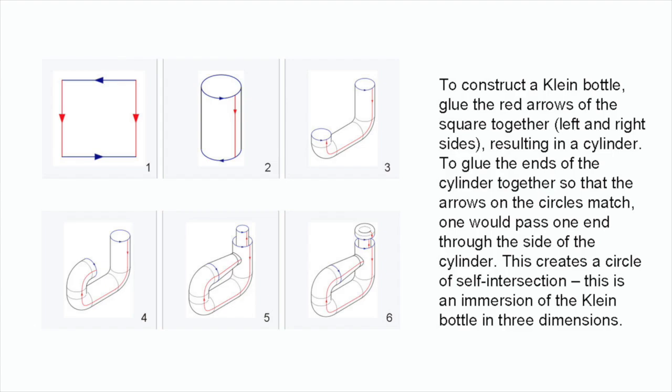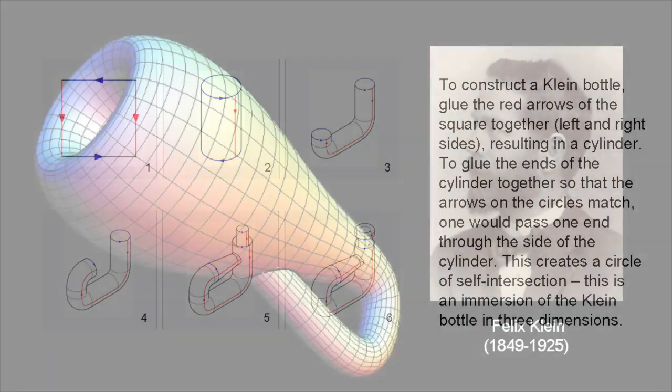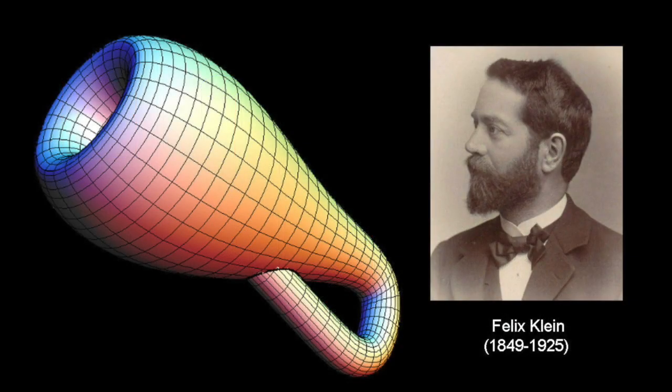It is if you have access to a fourth dimension, because that's what is needed to carry out the second step and to allow the surface to pass through itself without a hole. A true Klein bottle is a four-dimensional object.